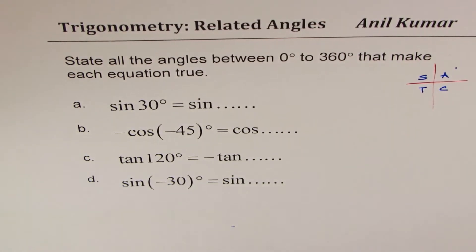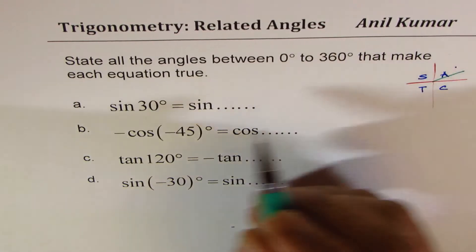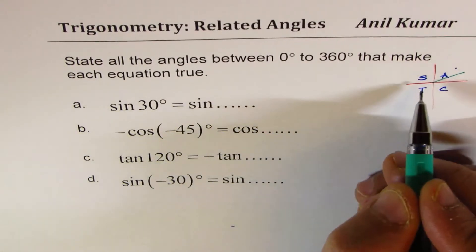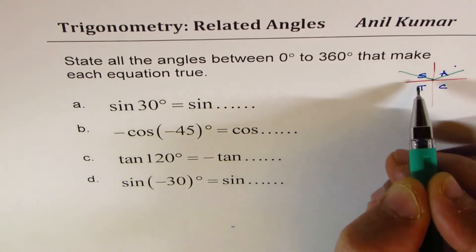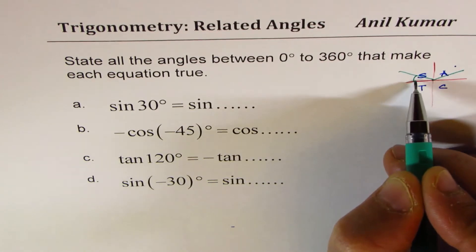So in this particular case we have an angle which is kind of like this. We are given sine 30 which is here. And another positive value will be in quadrant 2, making an acute angle of 30 degrees.